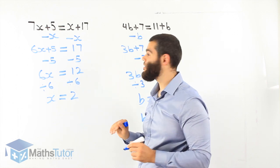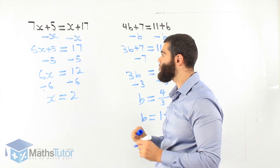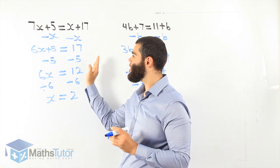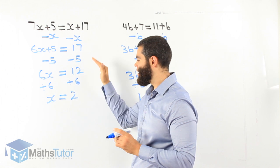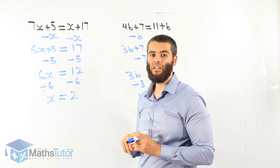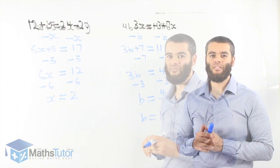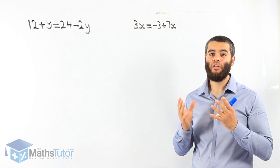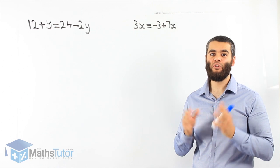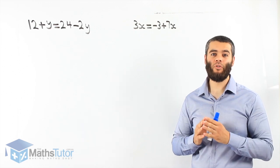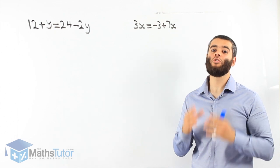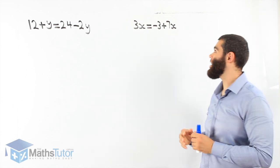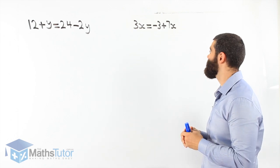The steps are very similar to all the other ones. We go step by step and concentrate — what we do to one side of the equation, we do to the other side. Let's do two more examples. 3x equals minus 3 plus 7x.